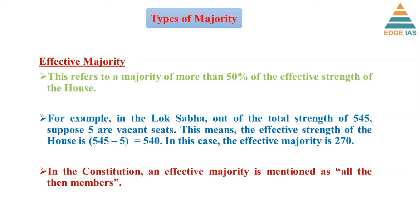For example, in the Lok Sabha, out of the total strength of 545, suppose five seats are vacant — nobody has been elected for those five seats. It means the effective strength of the house is 540. So in this case, the effective majority is 270.